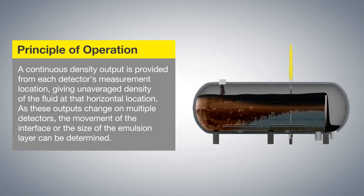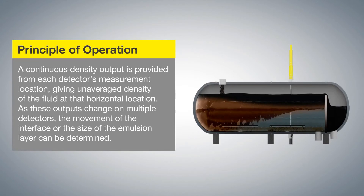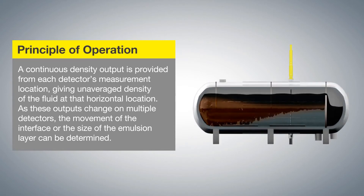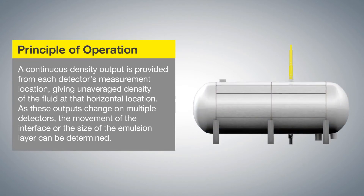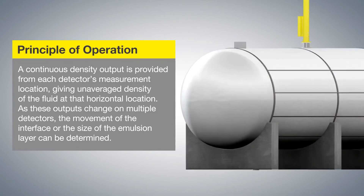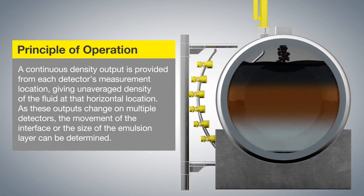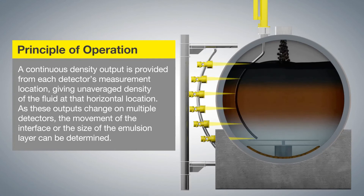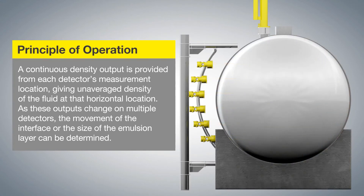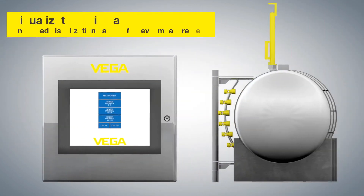Principle of Operation: A continuous density output is provided from each detector's measurement location, giving an average density of the fluid at that horizontal location. As these outputs change on multiple detectors, the movement of the interface or the size of the emulsion layer can be determined.